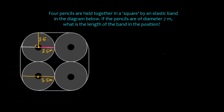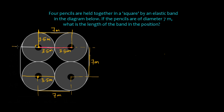Since the radius is 3.5 on both sides, the distance from the center of one circle to the center of the adjacent circle is 7. So the center-to-center distances are all 7 centimeters — this is 7, this is 7, this is 7, and this is also 7.